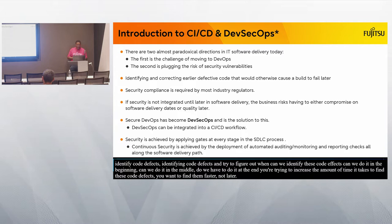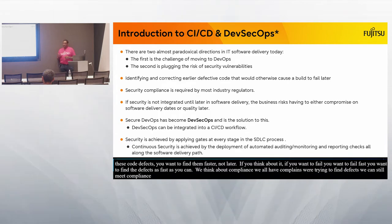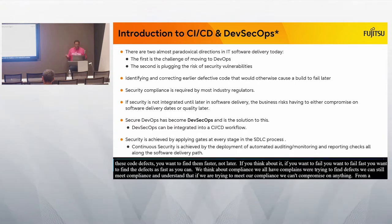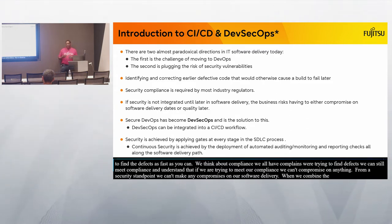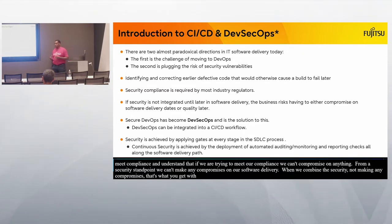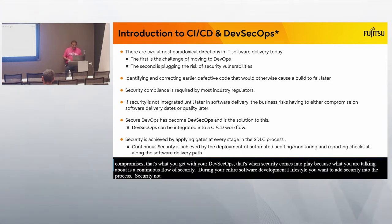We all have compliance requirements, so we're trying to find defects while still meeting compliance — and we can't compromise on anything from a security standpoint or on our software delivery. When you combine security without making compromises, that's what you get with DevSecOps. Security has to be a continuous flow throughout your entire software development lifecycle — not just at the beginning, middle, or end, but continuously throughout the process.